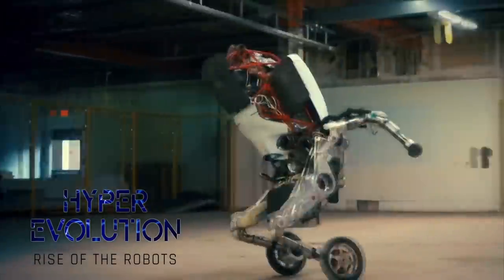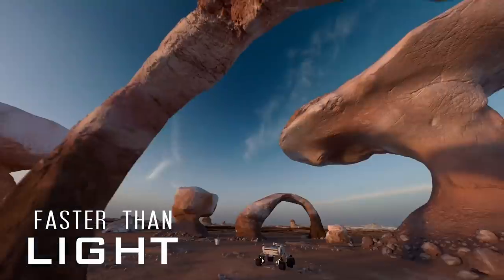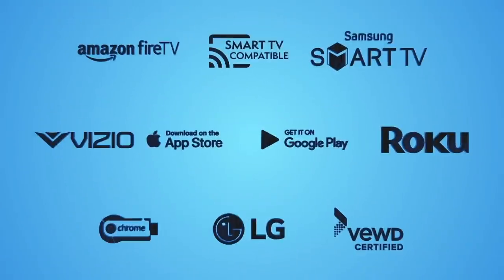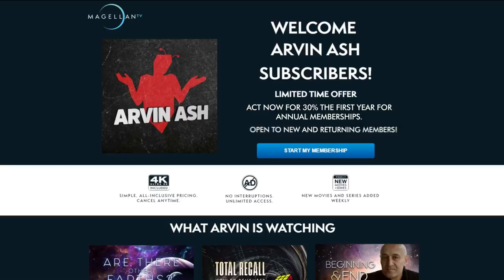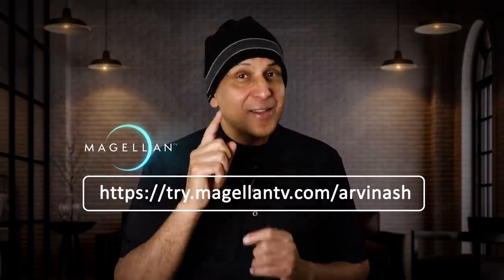Magellan is a new type of streaming documentary service founded by the filmmakers themselves who bring you premium documentary content. Featured subjects include history, nature, science, and technology. You can watch it on any of your devices as well as your TV anytime without ads. Magellan has a new offer right now for Arvin Ash viewers. You can get 30% off an annual membership. That's an entire year for less than $3.50 a month, which is valid for prior subscribers too.